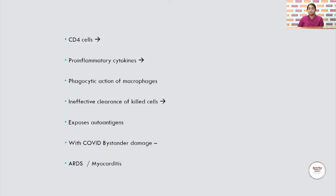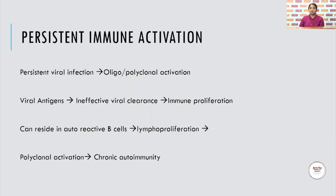CD4 cells produce pro-inflammatory cytokines. Phagocytic action of macrophages is brought on, and ineffective clearance of killed cells exposes autoantigens. With COVID-19, along with bystander damage, they produce side effects like ARDS and myocarditis. Persistent immune activation is due to persistent viral infection, which produces oligo- and polyclonal activation. Viral antigens are ineffectively cleared, leading to immune proliferation. They can reside in autoreactive B cells, which are committed to memory. This polyclonal activation can lead to chronic autoimmunity — some immune diseases may appear immediately during the COVID attack, and many may come much later.